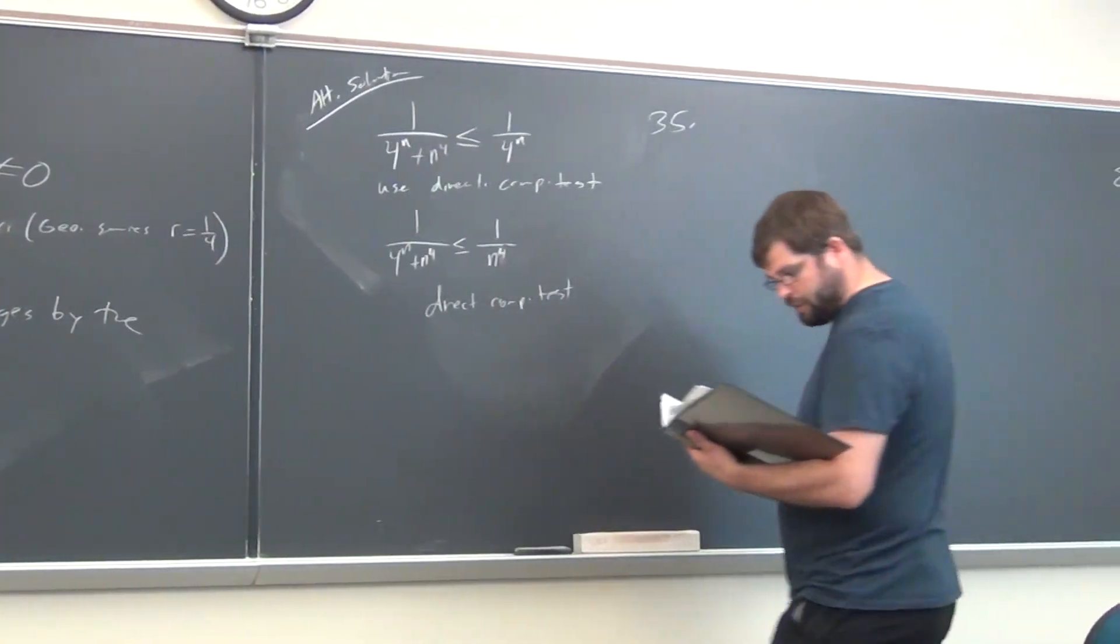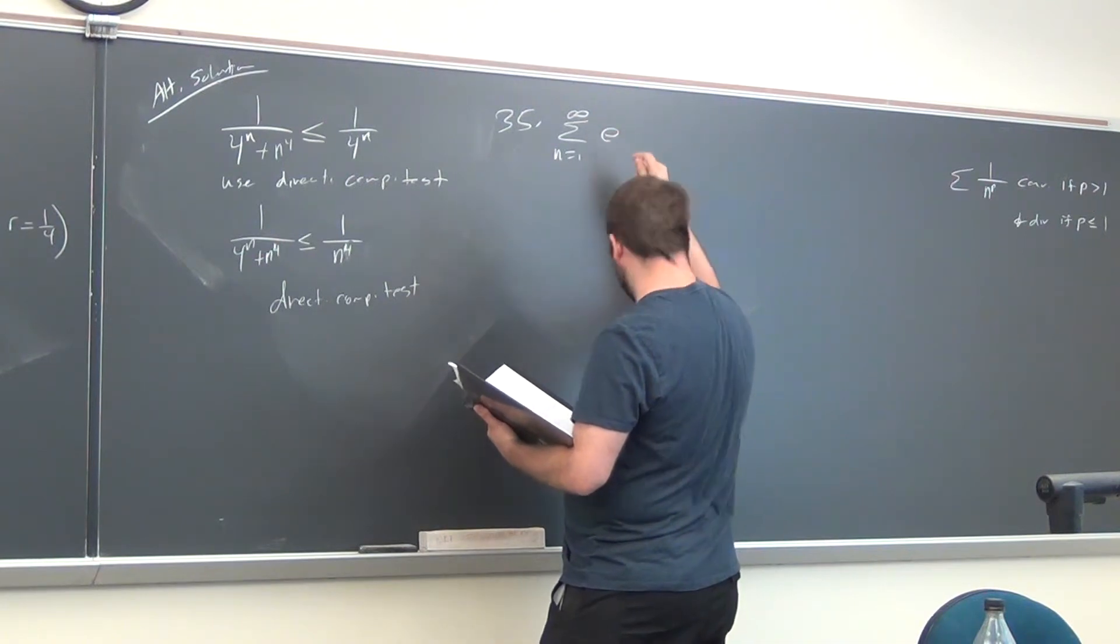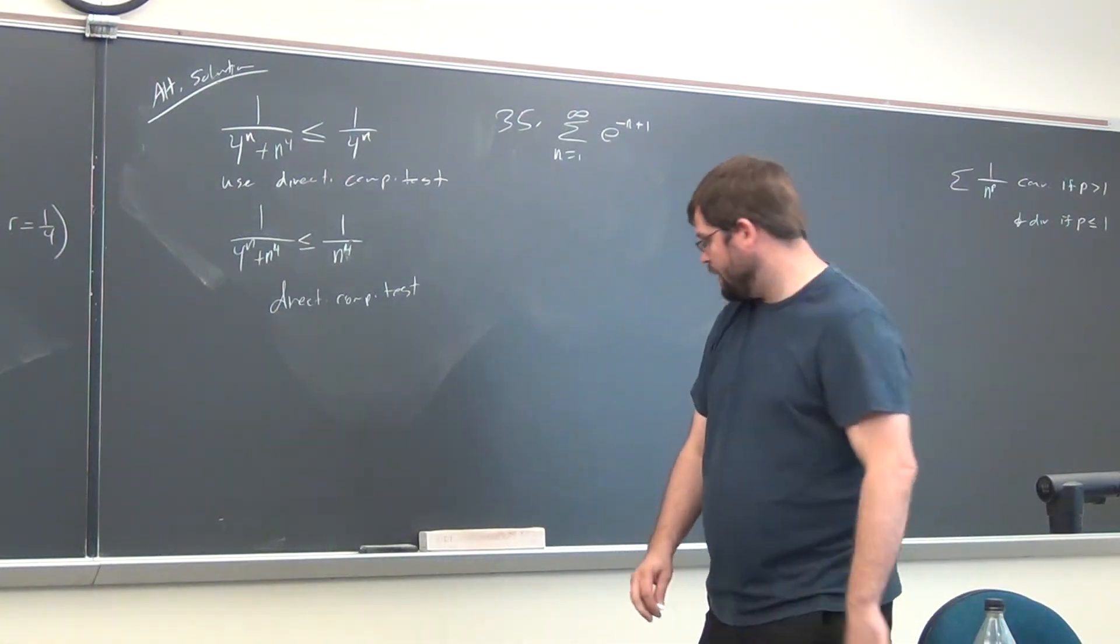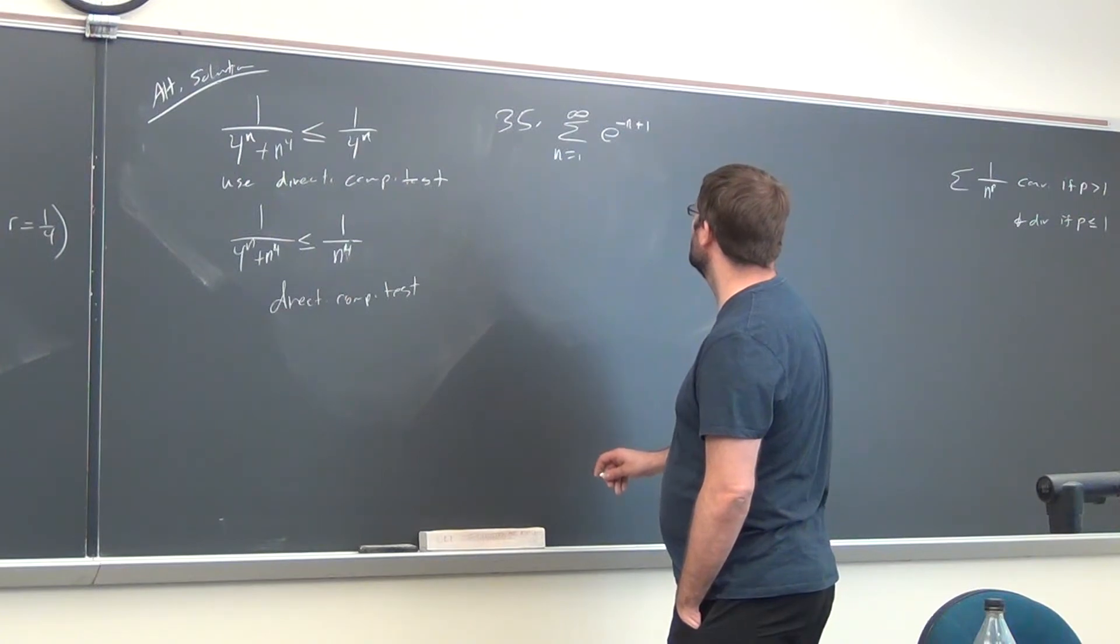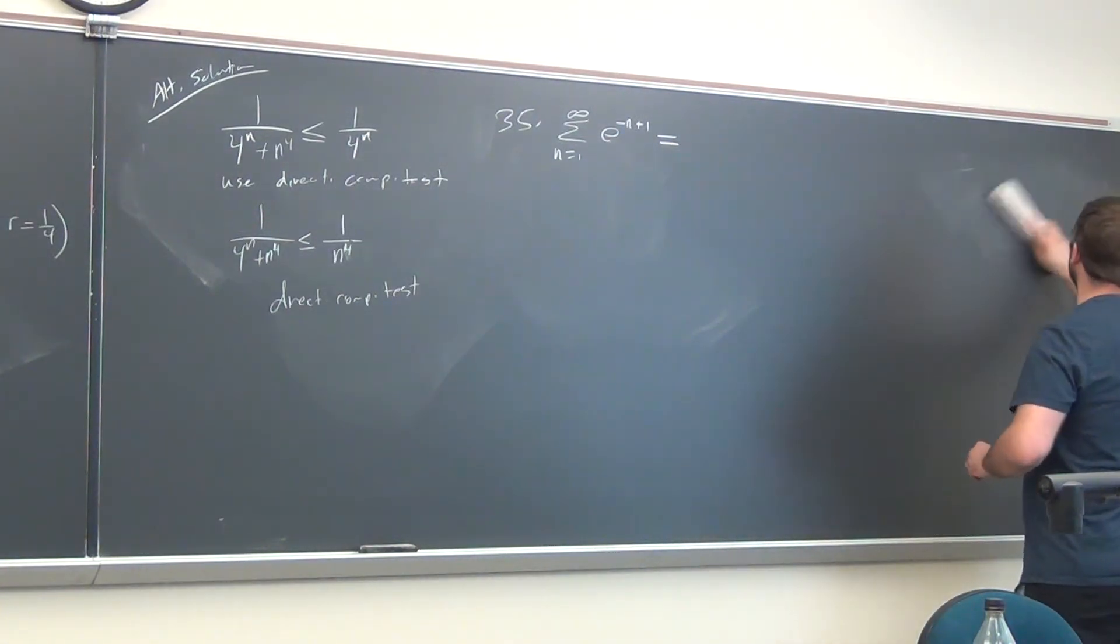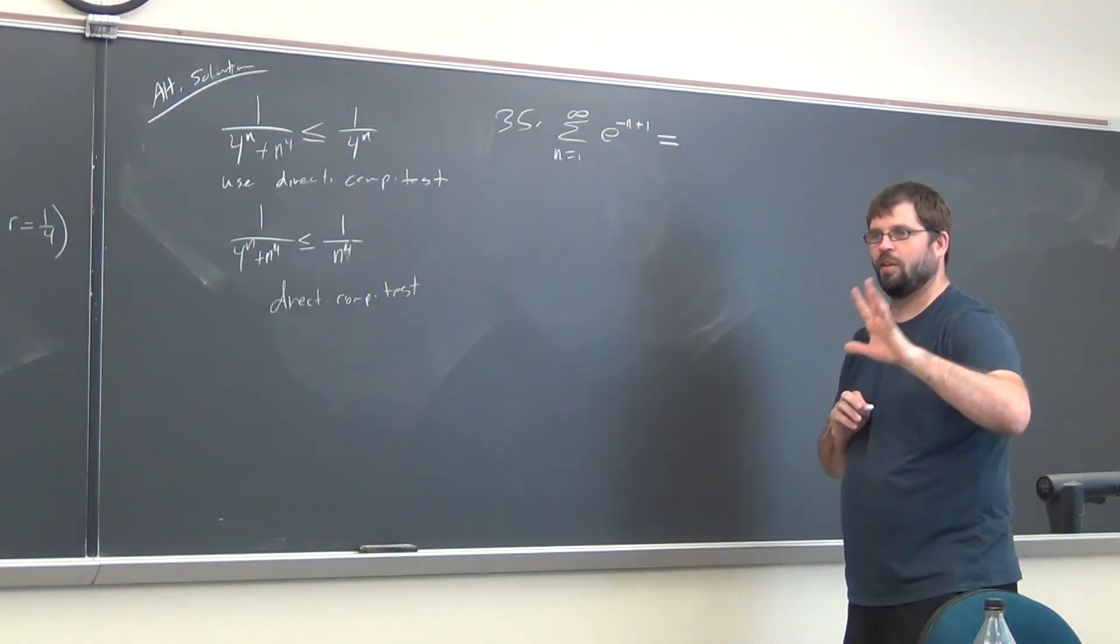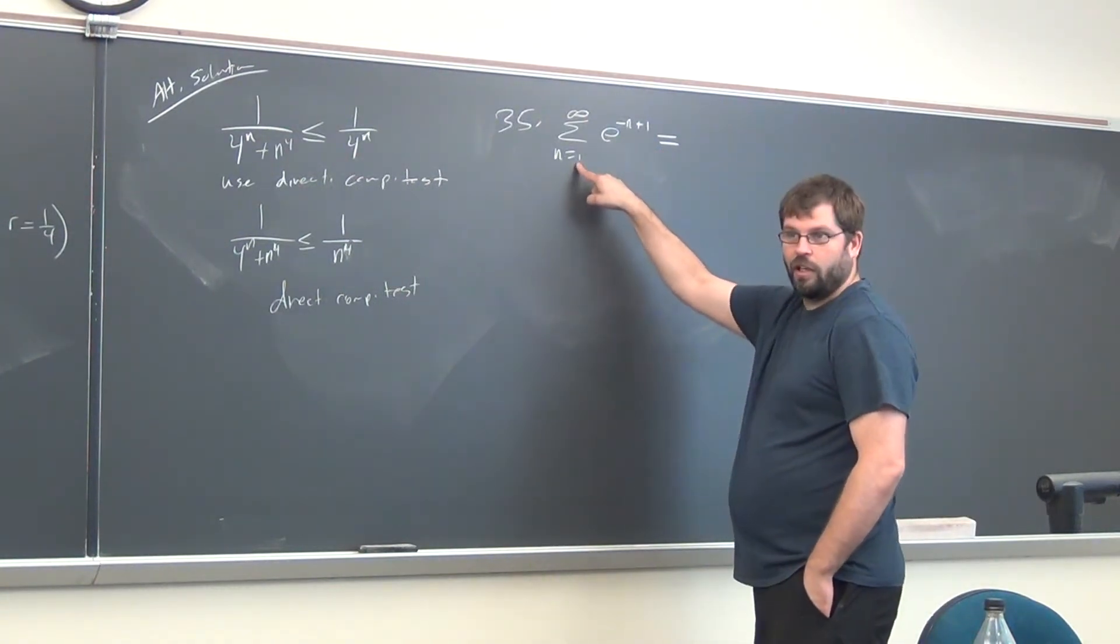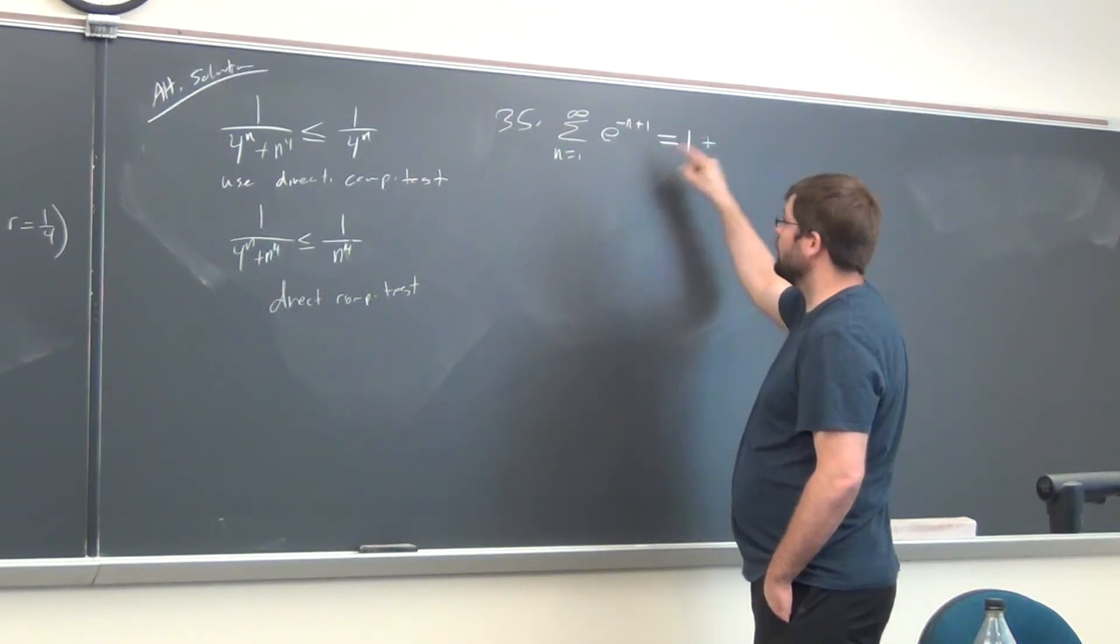So, 35 here. It's e to the negative n plus 1. Let's just approach this and pretend we don't see what's going on. Eventually, when you see this thing, you'll immediately know the answer, but it takes a little while before you get comfortable with seeing all that stuff. What's the first term going to be if I plug in 1? What will I get? e to the zero, which is 1. And then, what happens when I plug in 2? Negative 1, right? e to the negative 1 or 1 over e would be fine. What about when you plug in 3? Negative 2 and so on.